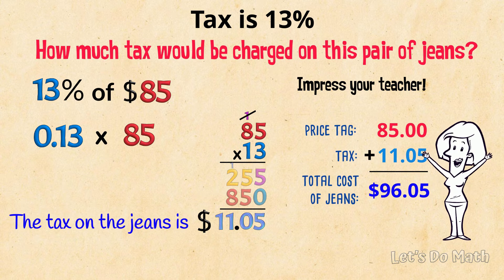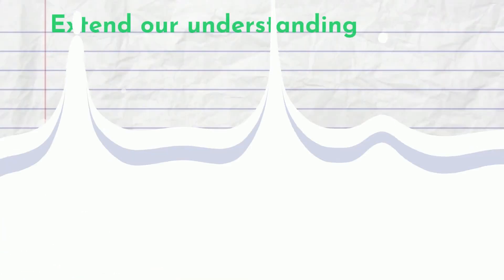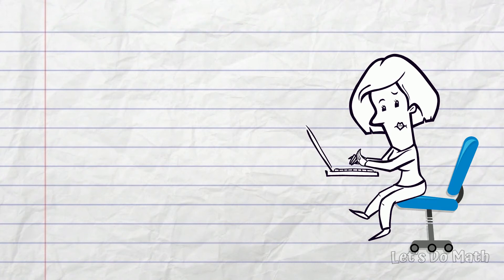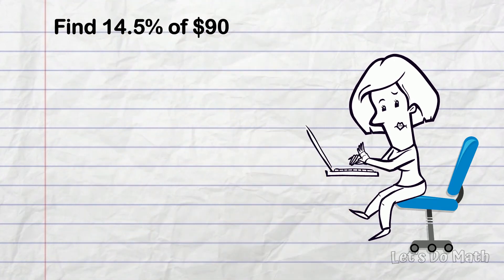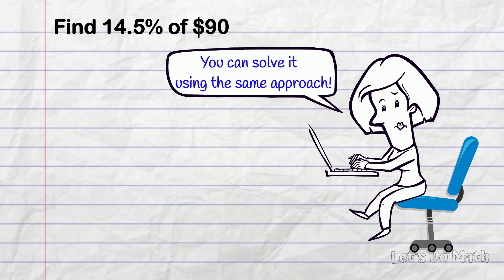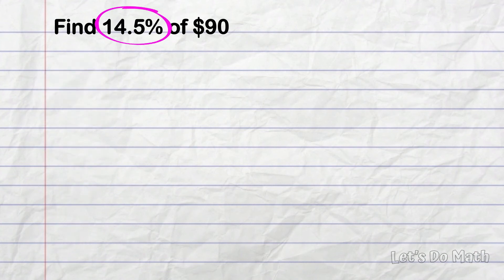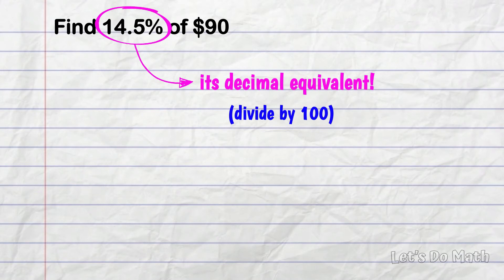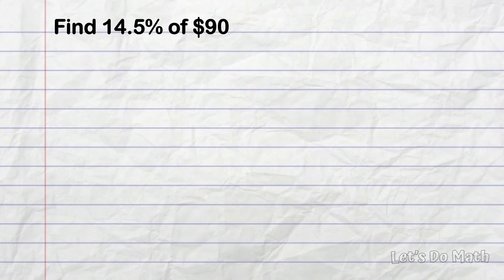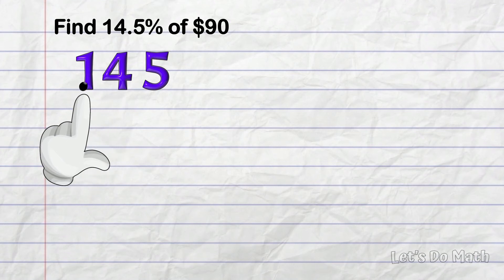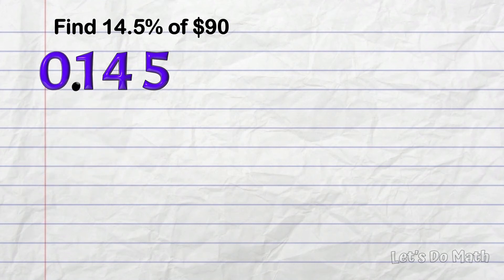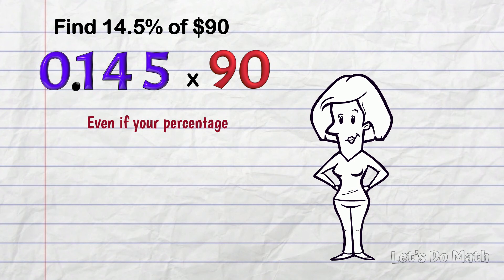Those word problems are quite manageable. Now let's extend our understanding a little bit. If you have to find 14.5% of $90, you can solve it using the same approach. Don't panic just because you see a decimal percent — you've got this. Turn 14.5% into its decimal equivalent: divide by 100, move the decimal point 2 places to the left: 0.145.